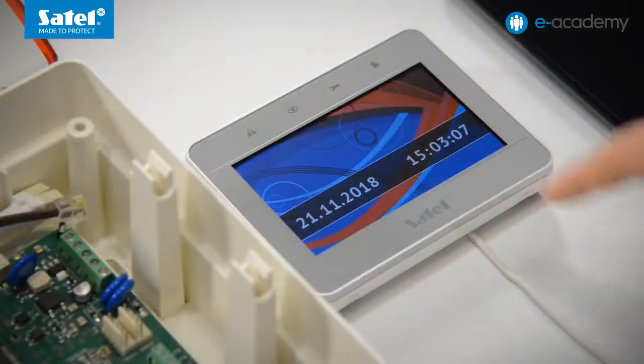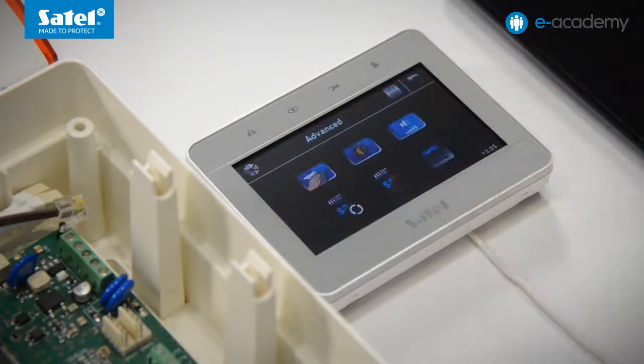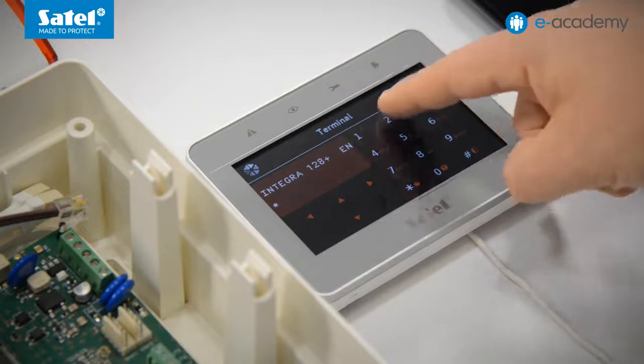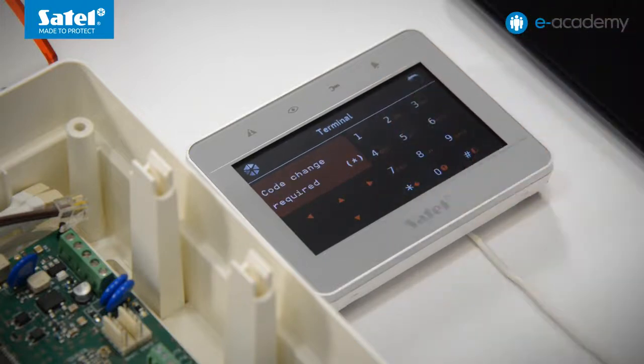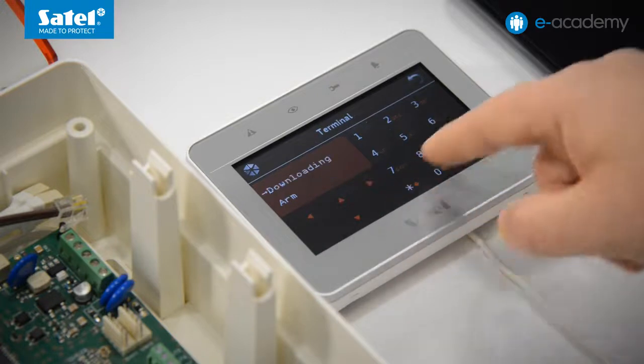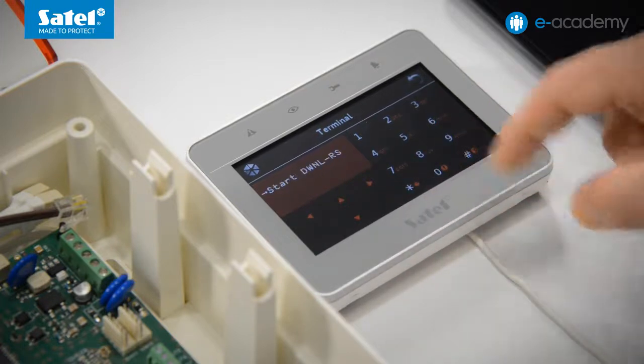To continue the configuration, I enter the local programming mode on the control panel. Open the terminal. Enter the service password and press asterisk to confirm. Next, go to the downloading item and press hash. Use the hash to run the local programming function.